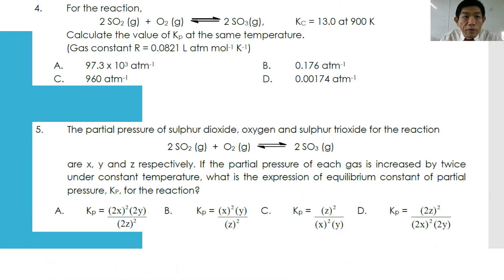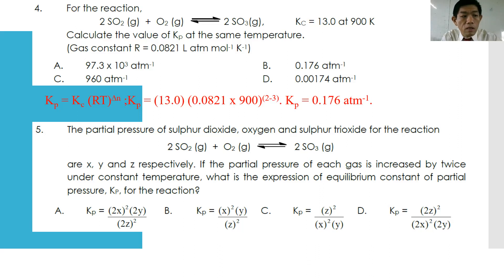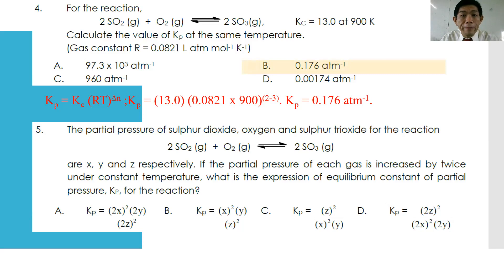For question number four: for the reaction 2SO₂ + O₂ → 2SO₃, calculate Kp at the same temperature. You use Kp = Kc × (RT)^Δn. So Kp = 13 × (0.0821 × 900 K)^(2−3). Pressing the calculator gives Kp = 0.176 atm. The answer is B.